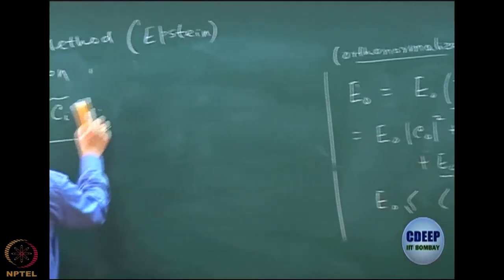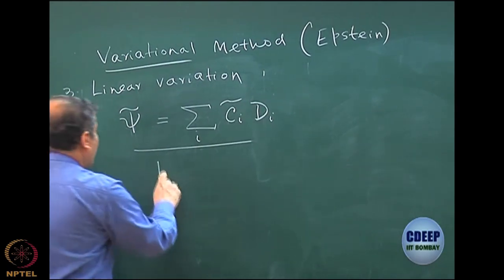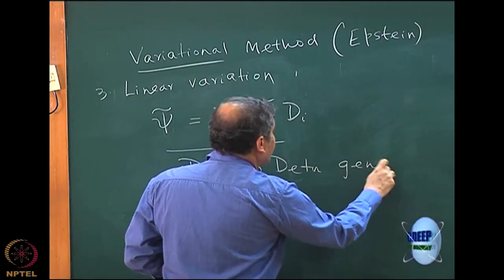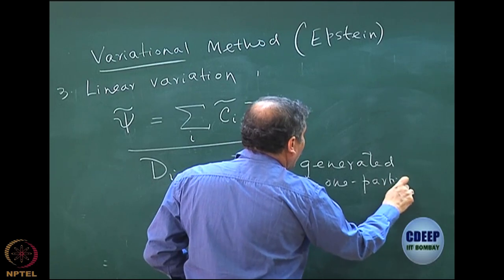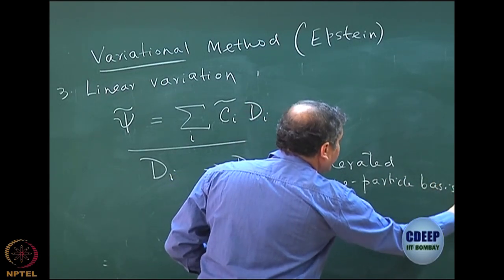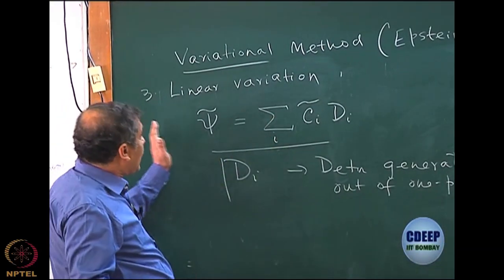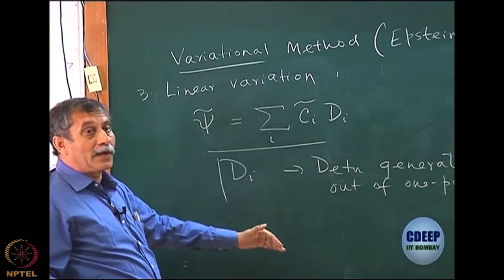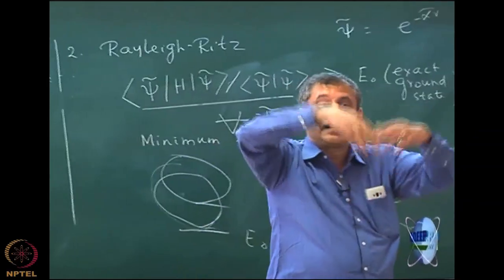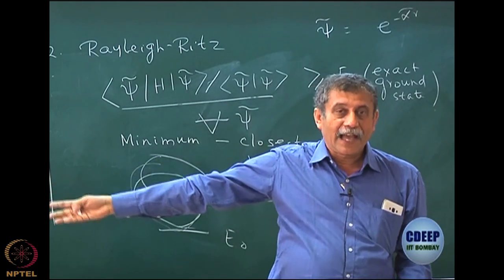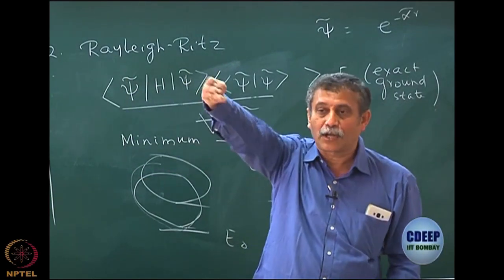Just so you do not get confused with chi, I should use a different symbol — d_i — to show that they are determinants. These d_i's are nothing but the determinants generated out of chi, out of the one-particle basis, which is my chi's. This is one example, but they need not be. It can be any basis. I am just trying to tell you that in case this basis is complete, then I do not have to go through what I am telling you.